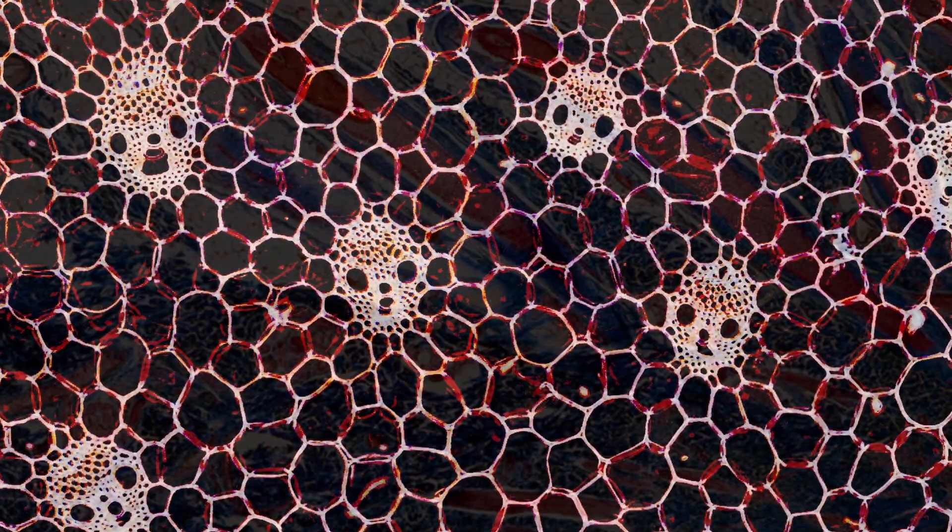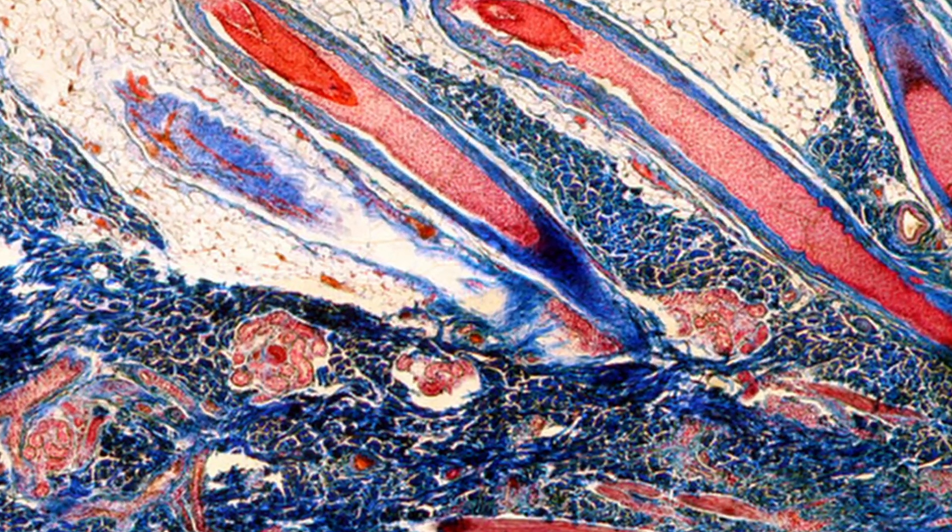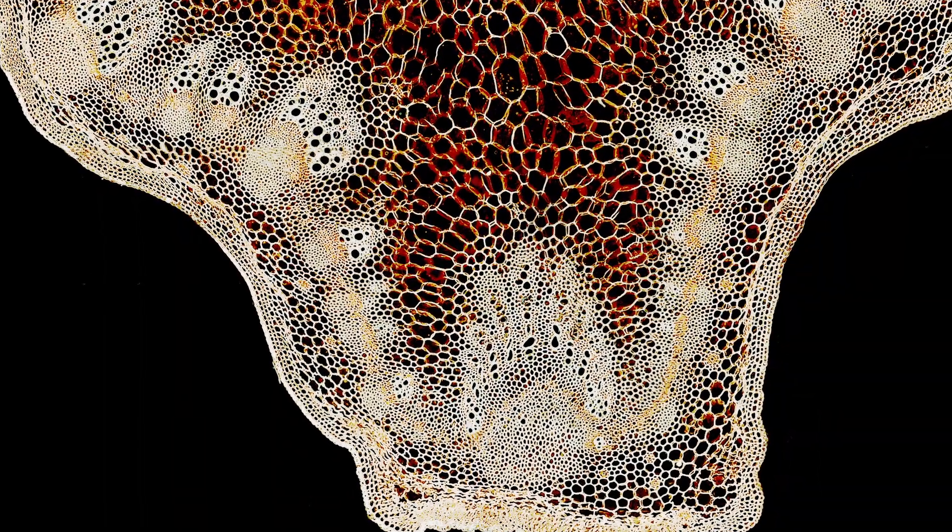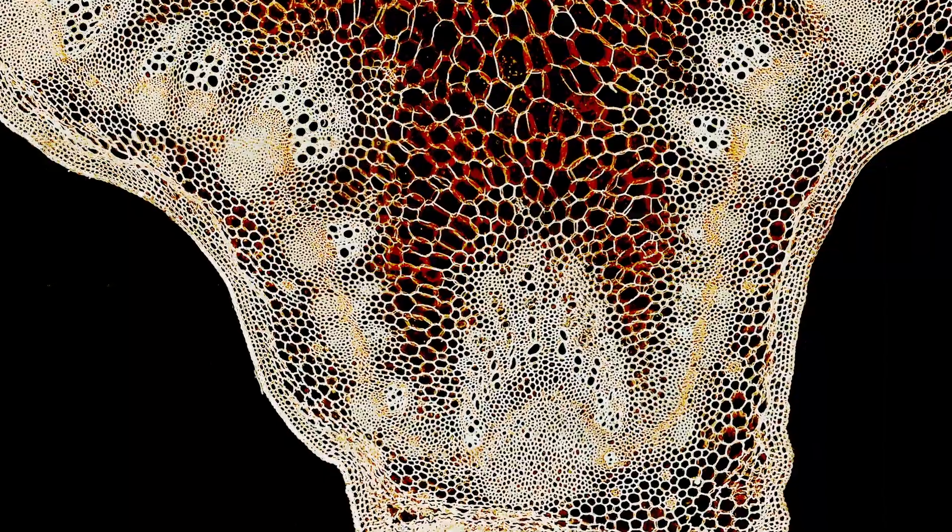Then all of a sudden my sister-in-law made a very interesting comment that got me thinking. She said, 'Well, actually all of those slides, they all look the same.' I said, 'Excuse me, what do you mean they look the same?' And I explained, 'Look at this plant stem cross section and this animal tissue—they're very different. In the plant you can see the xylem which transports water up the stem and the phloem which transports nutrients down. It's called the vascular bundle.'